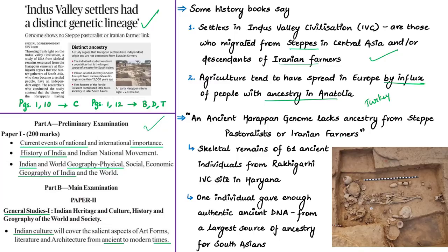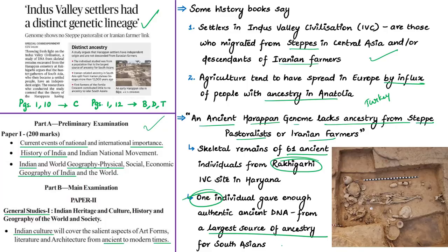A team of researchers attempted to generate genome data from skeletal remains of 61 ancient individuals from the IVC site of Rakhigarhi in Haryana. Only a single individual gave the required authentic ancient DNA for analysis. This individual is from a population that is the largest source of ancestry for South Asians. The findings are based on the study of this individual's genome in combination with available archaeological information.